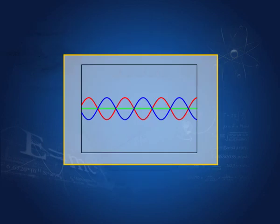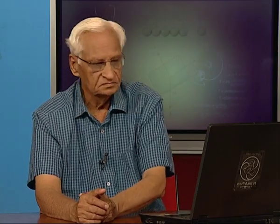Take another case: the red and blue waves are in opposite phase — same amplitude but opposite phase. At each point the displacement is zero, shown by the green line. We say that these two waves have undergone destructive interference. They are in opposite phase and therefore the displacement at each point is zero — there is in fact no wave, which is the sum of these two.